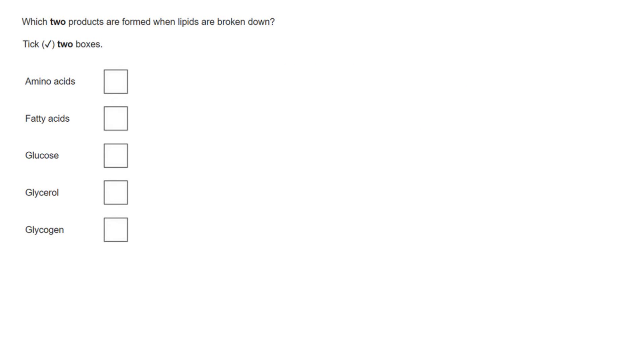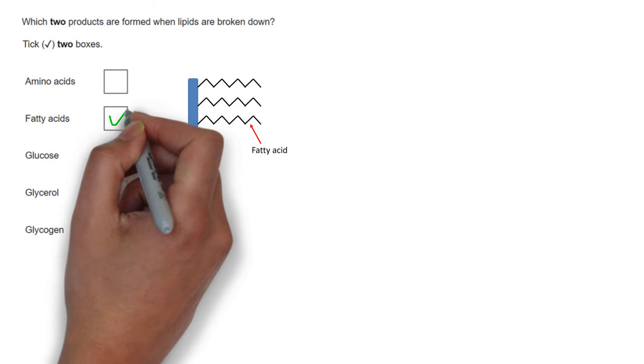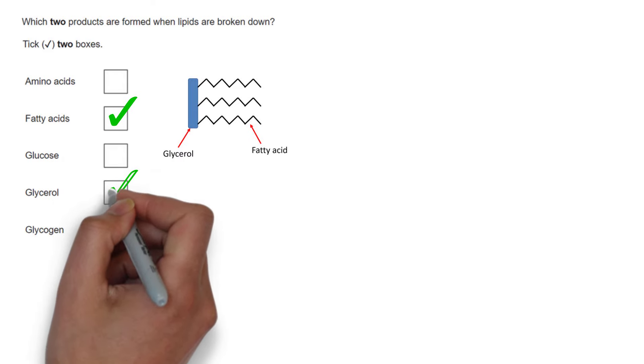The following questions are talking about food molecules and enzymes. The first says which two products are formed when lipids are broken down. Now we need to know that lipids are made from glycerol and fatty acids. So the answer is fatty acids and glycerol.